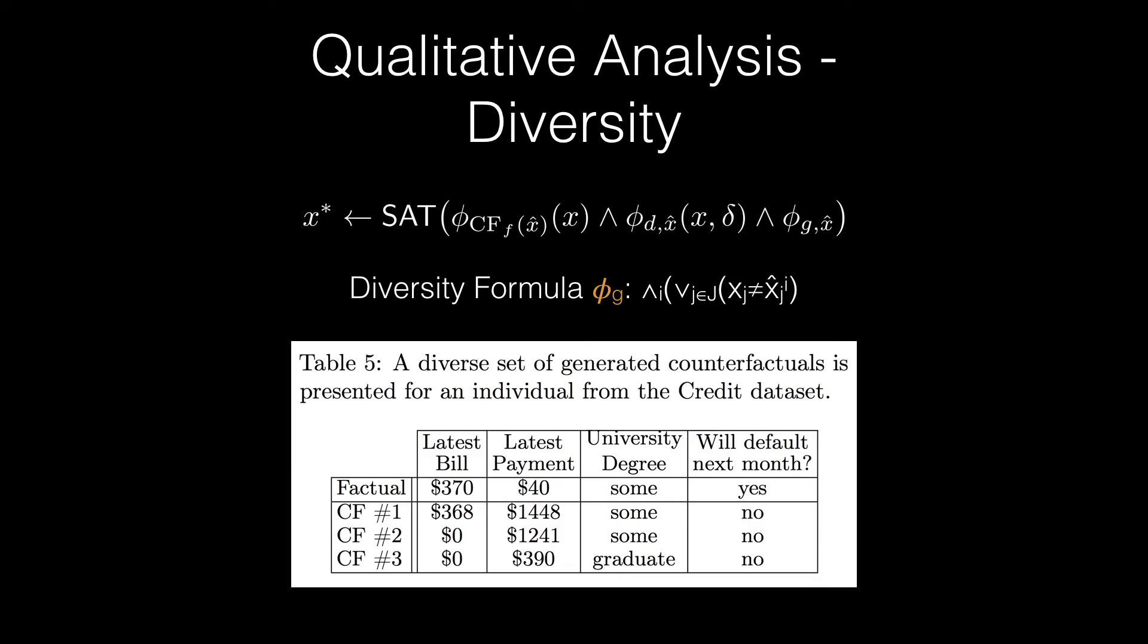Diverse suggestions are generated via successive runs of our presented algorithm, where each new run augments the constraints formula with an additional diversity clause, in this case enforcing L0 diversity, to restrict repetitive counterfactuals by enforcing subsequent recommendations to have a zero-norm distance of at least one from all previous counterfactuals.